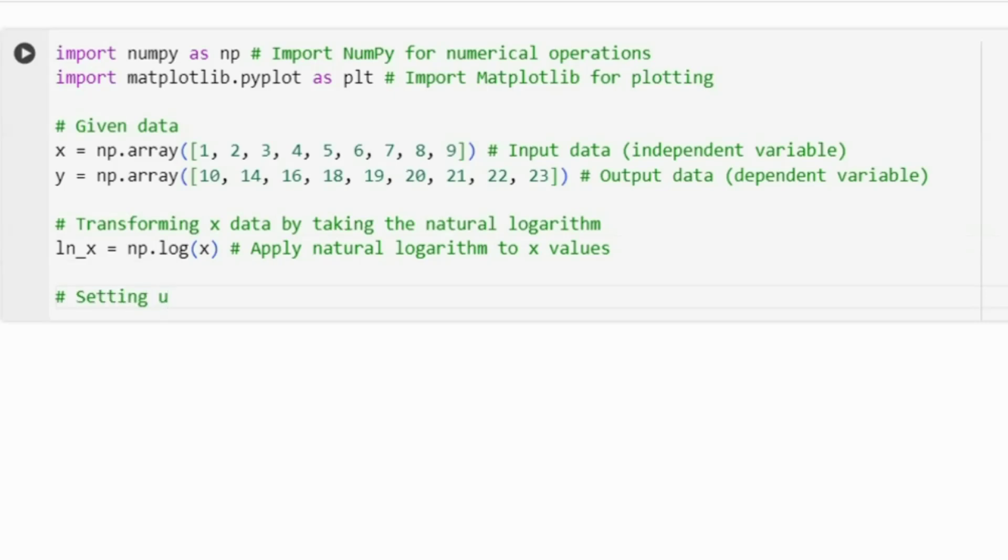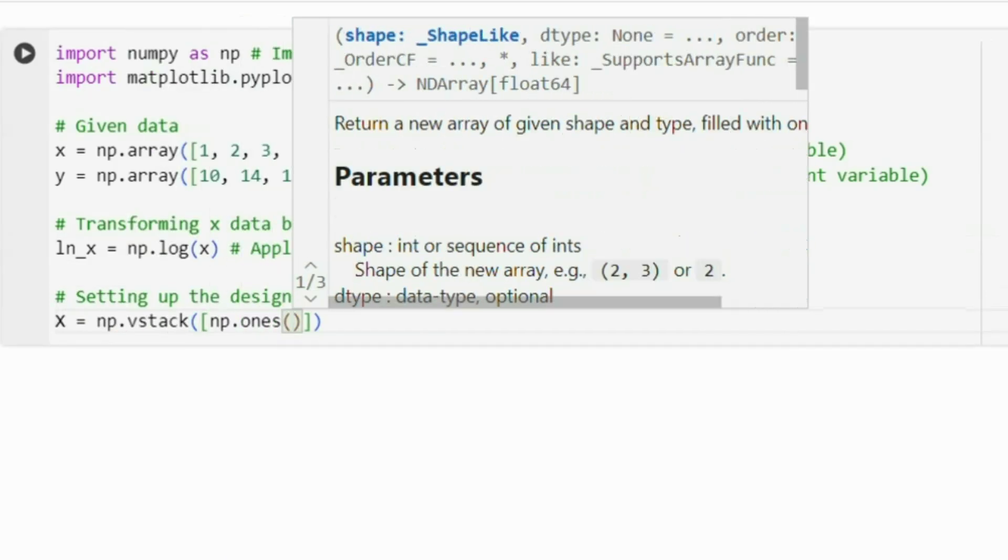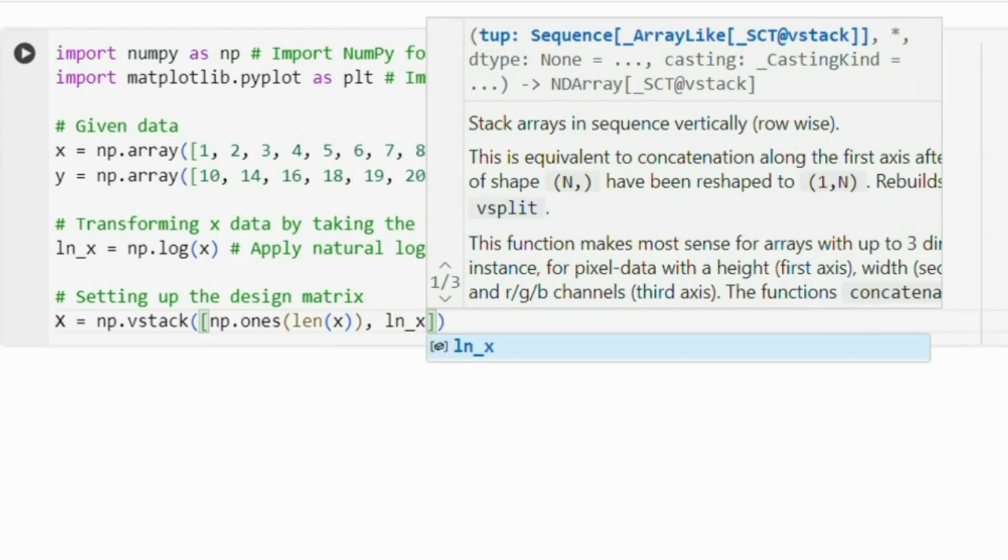With the transformed data, we set up the design matrix X. This matrix includes a column of ones to represent the intercept and a column of the transformed X values.